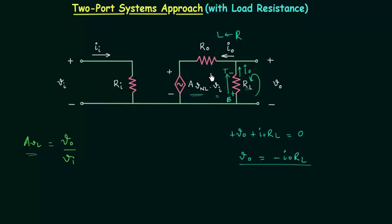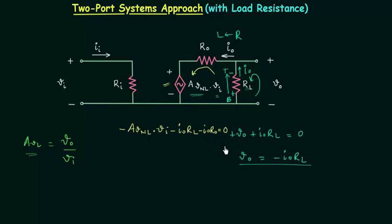We will again use Kirchhoff's voltage law but this time we will use it in the output loop. From KVL we have minus of AVNL multiplied with Vi, then we have minus of Io·RL — the drop across the load resistance — then we have minus Io·Ro — the drop across the output resistance — equal to zero. After rearranging this equation we have the output current equal to minus AVNL multiplied with Vi divided by the load resistance plus the output resistance.